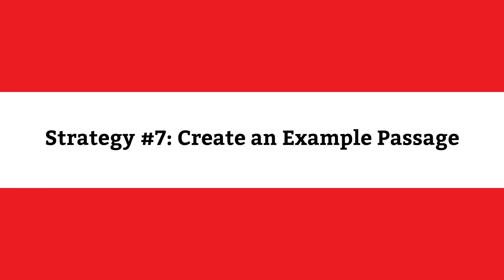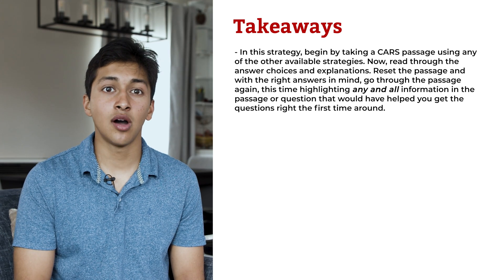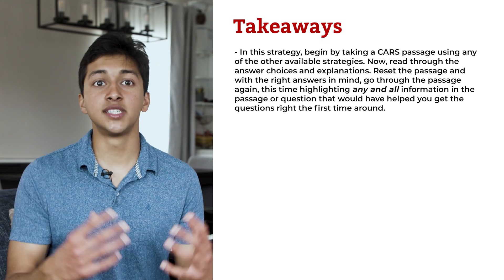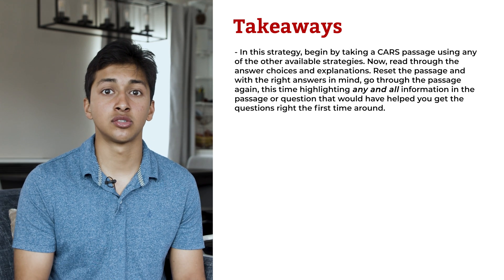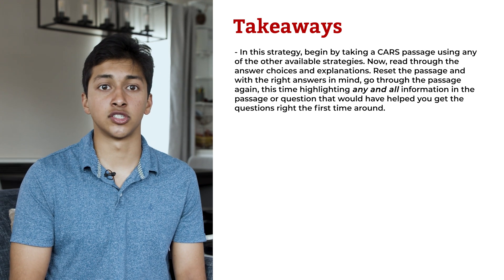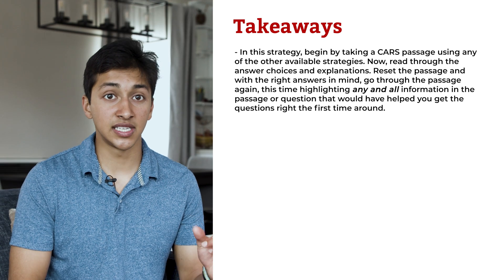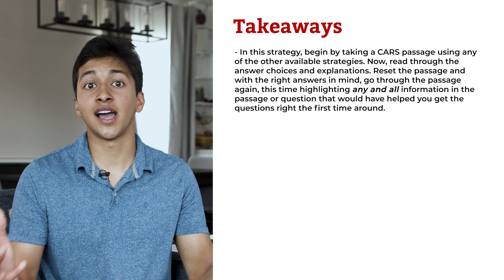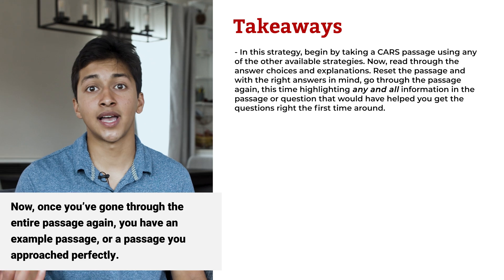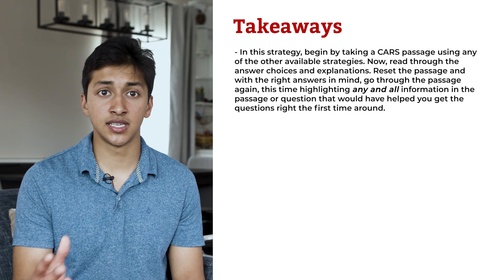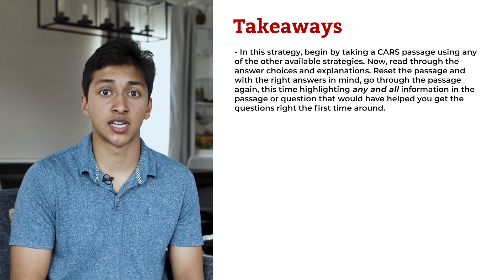MCAT CARS strategy number 7: create an example passage. In this strategy, begin by taking a CARS passage using any of the other available strategies. Now read through the answer choices and explanations. Reset the passage and with the right answers in mind, go through the passage again, this time highlighting any and all information in the passage or question that would have helped you get the questions right the first time around. If you missed a key piece of text evidence, highlight it. If you missed the 'least likely' in the question stem and therefore missed the question, highlight that part. Once you've gone through the entire passage again, you have an example passage — one that you've approached perfectly. Do this for a few passages ranging from easy to medium to hard, so you have a handful of passages to refer back to.